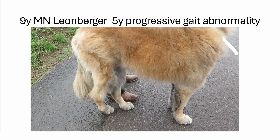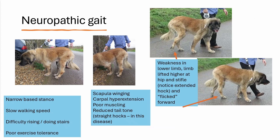Looking at these aspects in more detail, when he stood he had a very narrow-based stance and a slow walking speed. This dog also has a history of difficulty rising and doing stairs, and he has poor exercise tolerance.